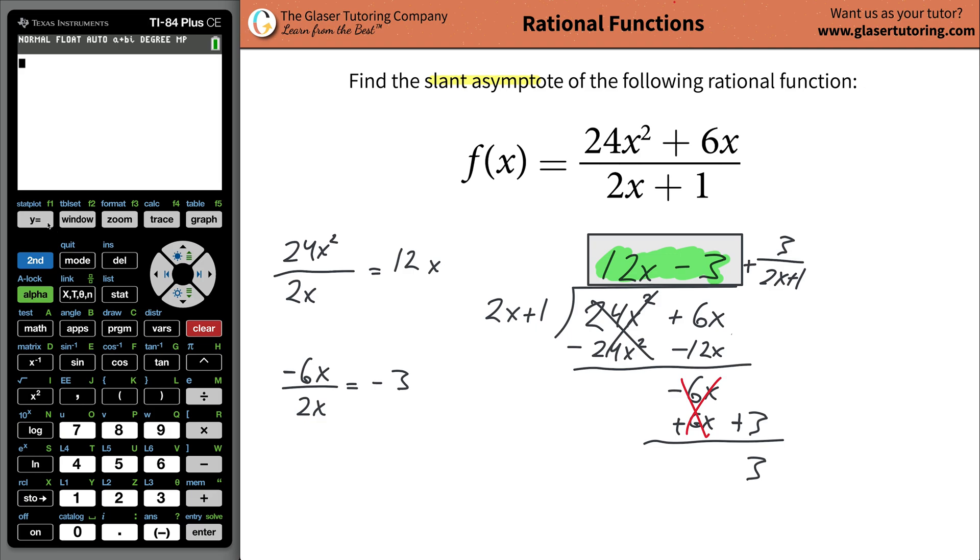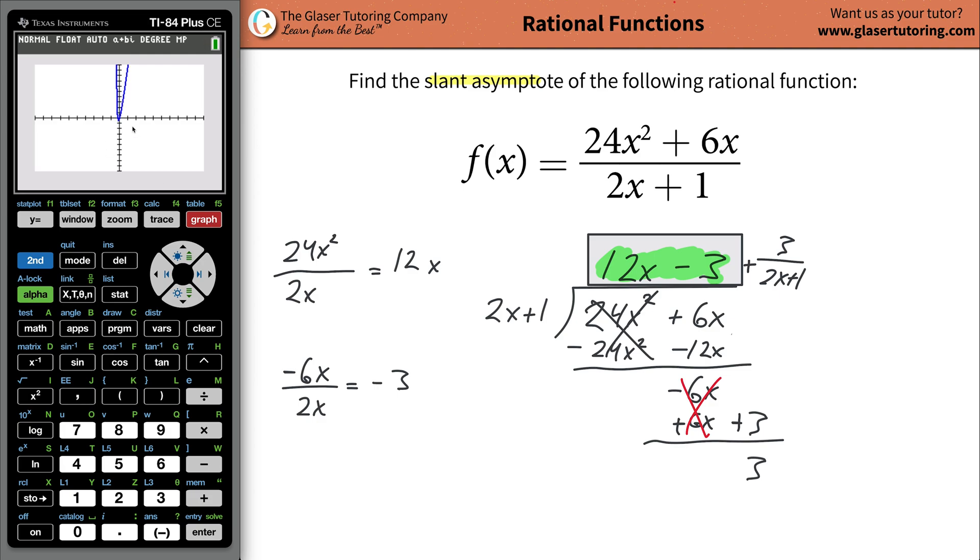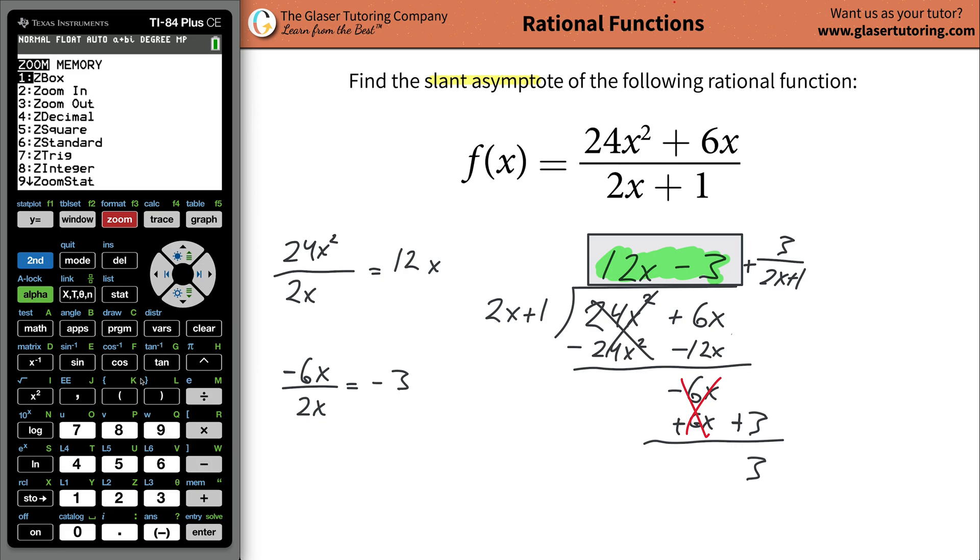So we can always check it with the calculator too. Watch. So plot your function up here, 12x squared. Uh, 12, what? 24. 24x squared. And I should have put that in parentheses. So 24x squared. 24x squared plus then your 6x. Close the parentheses, then divide it by the whole denominator. Open the parentheses again. 2x plus 1. Close them up. Hit graph. Okay? So that's kind of the function. A little funky. Maybe I should zoom out a little bit. I don't know. It's a little weird.